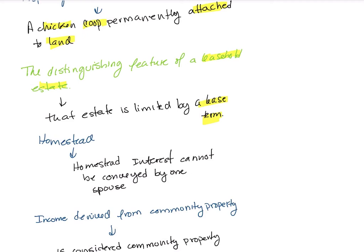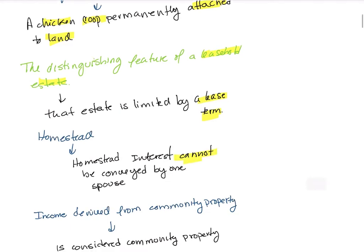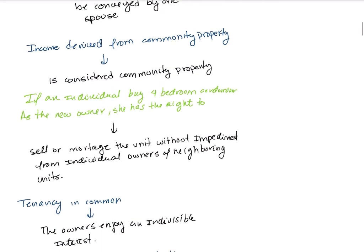A homestead in Florida is notable because the homestead interest cannot be conveyed by one spouse alone. As for income from community property, any income derived from community property is itself considered community property.